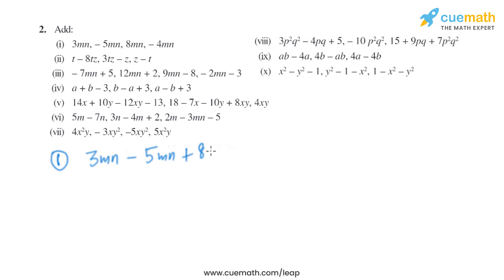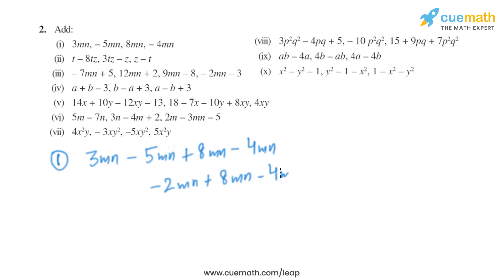Plus 8mn, and again plus-minus becomes minus, so minus 4mn. So 3mn minus 5mn gives us minus 2mn; plus 8mn minus 4mn: minus 2 plus 8 gives us 6mn, minus 4mn gives us 2mn.